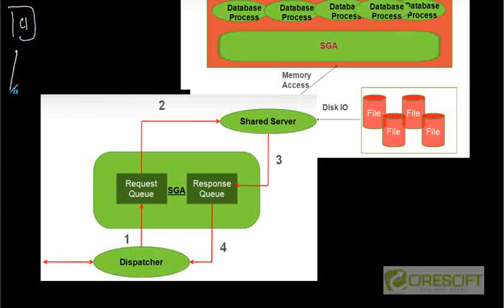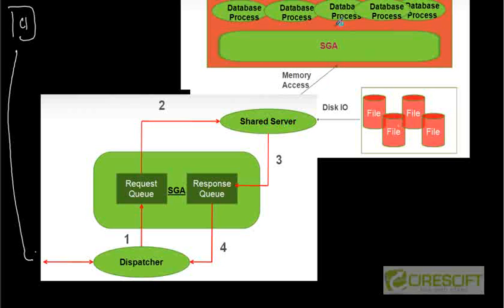Here is the final picture of how it looks. Client C1 comes to the listener, the listener creates a dispatcher, the dispatcher puts the command into the request queue, and the shared server pulls from the request queue. When the shared server is free, it executes using SGA and files, and when the answer is ready it puts it in the response queue. The dispatcher then gets the result from the response queue and returns it to the client.